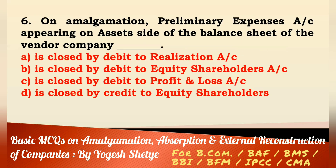Question 6: On amalgamation, preliminary expenses account appearing on the asset side of the balance sheet of the vendor company — is closed by debit to Realization account, debit to Equity Shareholders account, debit to Profit and Loss account, or credit to Equity Shareholders account? Answer: It is closed by debit to Equity Shareholders account. Answer B.